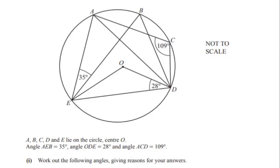Hello and welcome to my channel. In this video we are going to solve an example on circle theorems. Points A, B, C, D and E lie on the circle with center O. Angle AEB is 35 degrees, angle ODE is 28 degrees, and angle ACD is 109 degrees.